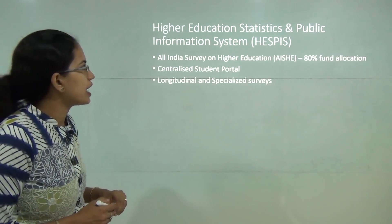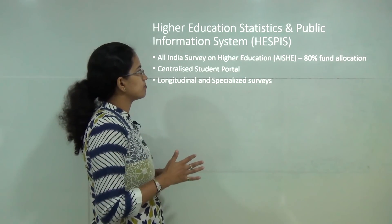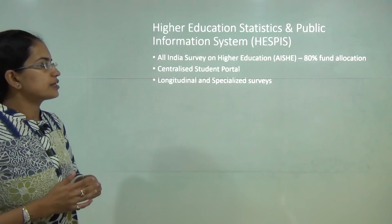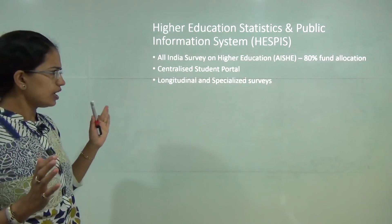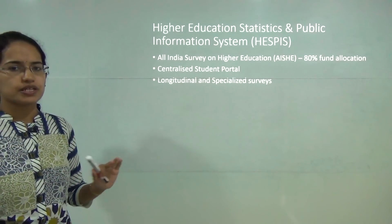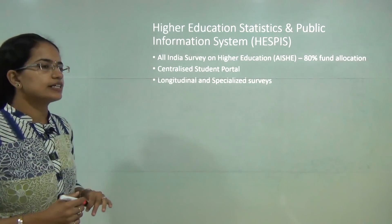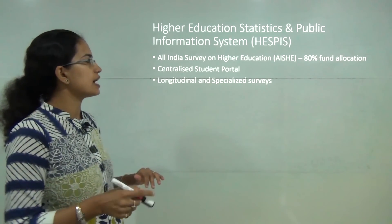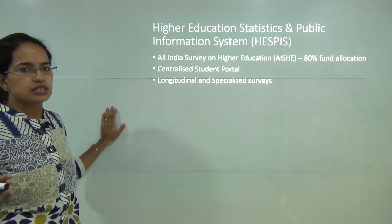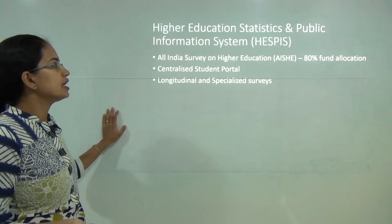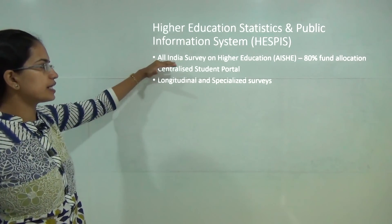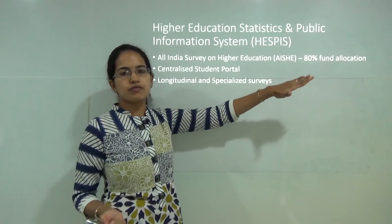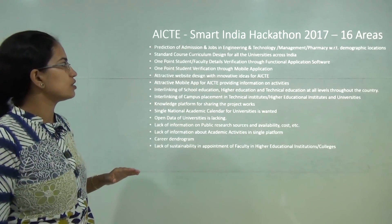Next is HESPIS, the Higher Education Statistics and Public Information System. It talks about establishing a central student portal and conducting longitudinal and specialized surveys to understand the present education setup and how improvements could be made. As a result, an All India Survey on Higher Education was conducted, with 80% of the fund allocated for this job.